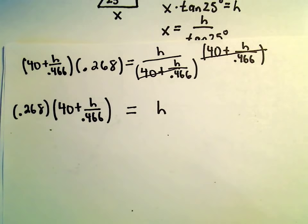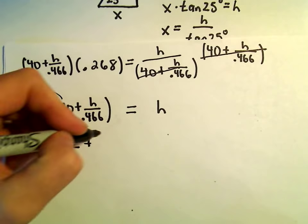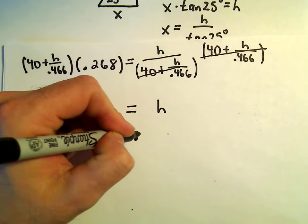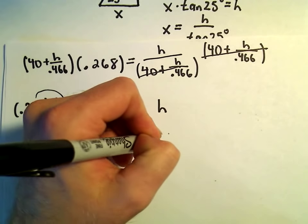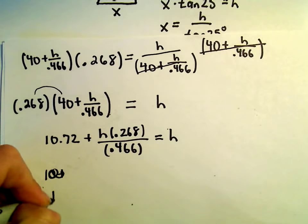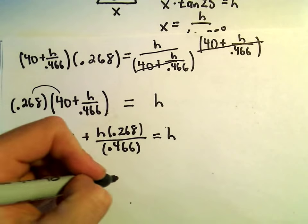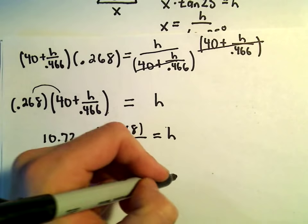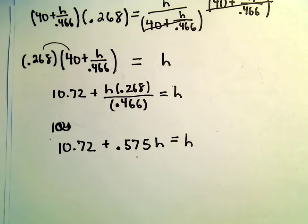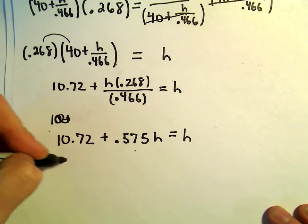So 0.268 times 40. When we distribute here, I'm getting this to be 10.72. And then we would get h times 0.268 over 0.466 equals h. So 0.268 divided by 0.466, I'm getting that to be 0.575. Again, multiplied by h. That equals h. And now I've got a nice linear equation. I'm just going to subtract 0.575h from both sides.